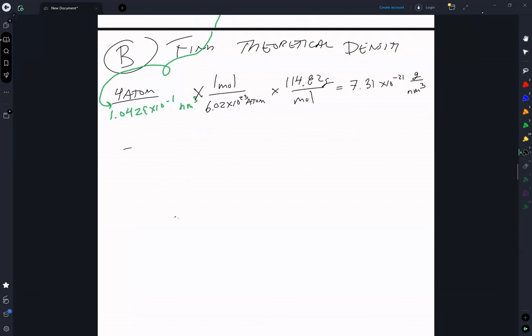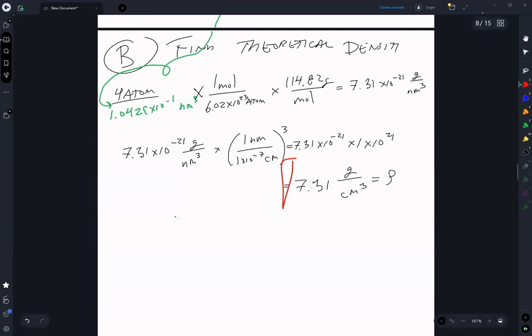So we take 7.31 times 10 to the minus 21 gram per nanometer cubed times one nanometer per one times 10 to the minus 7 centimeter quantity cubed, which is equal to 7.31 times 10 to the minus 21 times one times 10 to the 21, is equal to 7.31 gram per centimeter cubed. So that is our theoretical density.